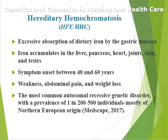Hereditary hemochromatosis results in excessive absorption of dietary iron by the gastric mucosa. Iron accumulates in the liver, pancreas, heart, joints, skin, and testes. Symptom onset occurs between ages 40 to 60 years. The genetic predisposition requires some environmental or triggering factor before the phenotype is expressed. Early symptoms are weakness, abdominal pain, and weight loss. This is the most common autosomal recessive genetic disorder, with a prevalence of one in 200 to one in 500 individuals, mostly of northern European descent.